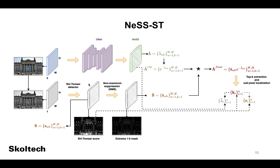We call the combination of the Shi-Tomasi detector and the neural stability score regressor NESS-ST. The method takes an image and uses the Shi-Tomasi detector to detect locations of extrema. Simultaneously, it uses the neural network to regress the neural stability score. Finally, keypoints detected by the Shi-Tomasi detector are selected using the neural stability score.